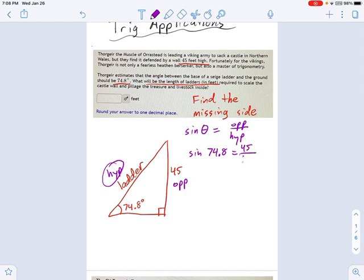So what trig function talks about opposite and hypotenuse? I hope you're thinking sine. So sine of theta equals opposite over hypotenuse. And we plug in the values we know. So this becomes sine of 74.8 equals 45 divided by h, the hypotenuse.